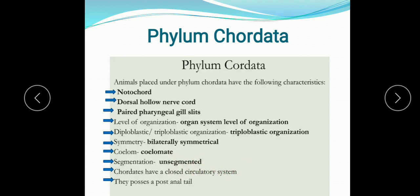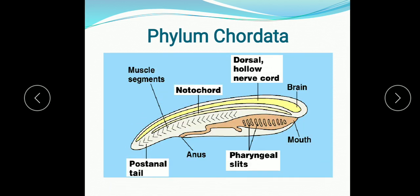They have a closed circulatory system where blood flows through vessels. They possess a post-anal tail and development is usually direct, sometimes involving a larva. Heart is always on the ventral side and is myogenic. Hemoglobin is present inside the RBCs. These are the features of phylum Chordata. The key identifying features are notochord, dorsal hollow nerve cord, and paired pharyngeal gill slits. This is the dorsal hollow nerve cord, and this is the notochord.